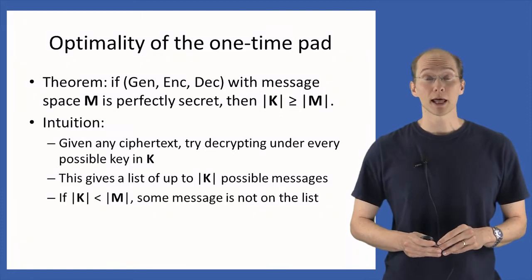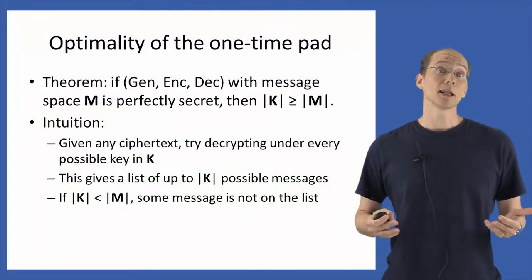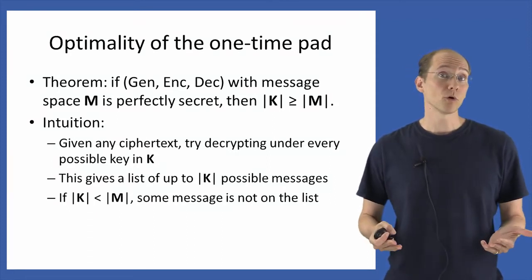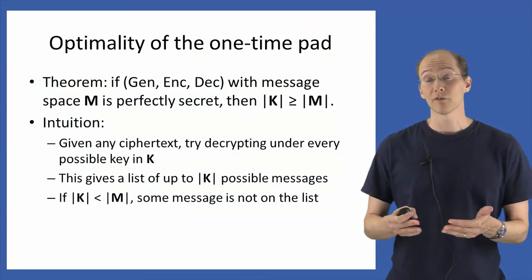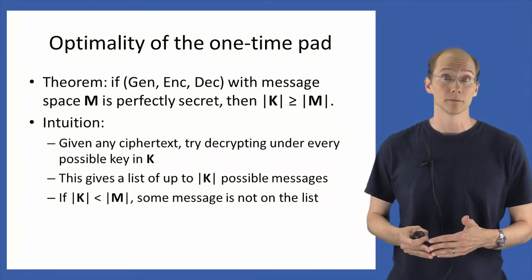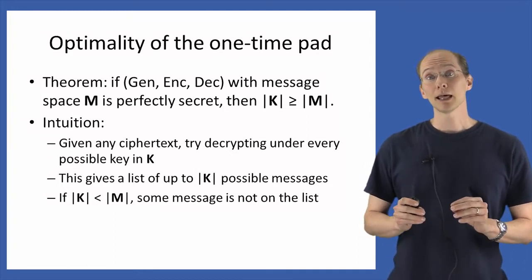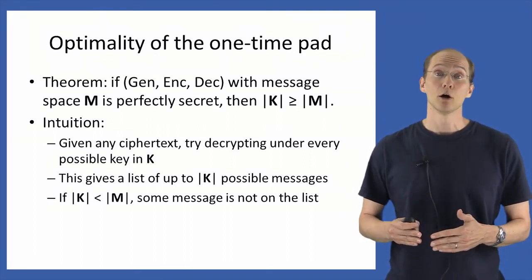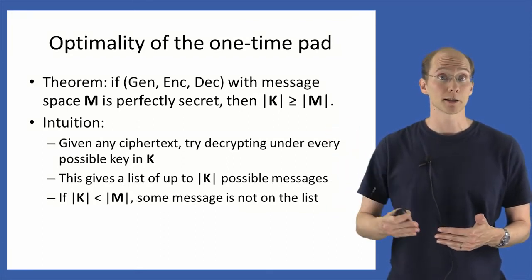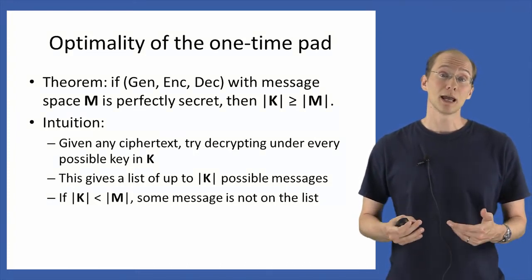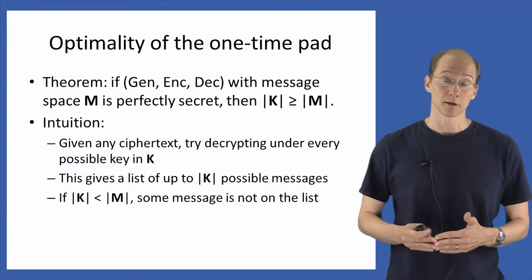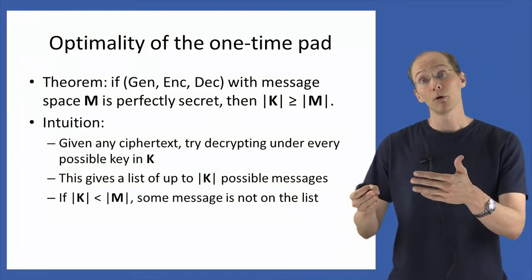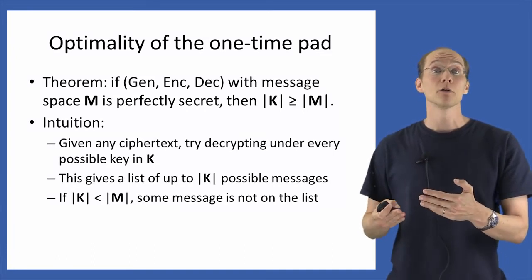The intuition for this theorem is actually very simple. The basic idea is that given any ciphertext, an attacker can simply try decrypting that ciphertext using every possible key in the key space — we've seen this before for the shift cipher, where given a ciphertext, an attacker can just decrypt using all 26 possible keys. If the attacker does this, it obtains a list of possible messages that can correspond to that ciphertext. That list can contain at most as many messages as there are keys in the key space, since each decryption yields one message, even if two different keys map to the same message.